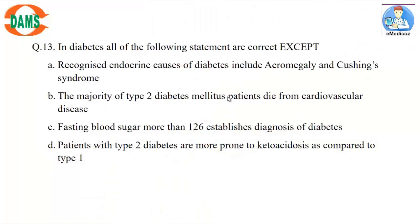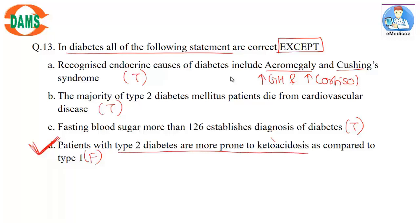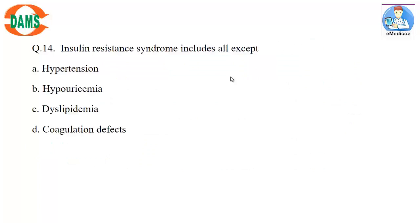Question 13: In diabetes, all of the following statements are correct except. Recognized endocrine causes include acromegaly and Cushing's — both involve counter-regulatory hormones that can lead to diabetes. Majority of type 2 diabetics die from cardiovascular disease. Fasting blood sugar more than 126 establishes the diagnosis. The false statement is option D: patients with type 2 are more prone to ketoacidosis. No — they are prone to hyperosmolar non-ketotic coma; it is type 1 that is prone to diabetic ketoacidosis.